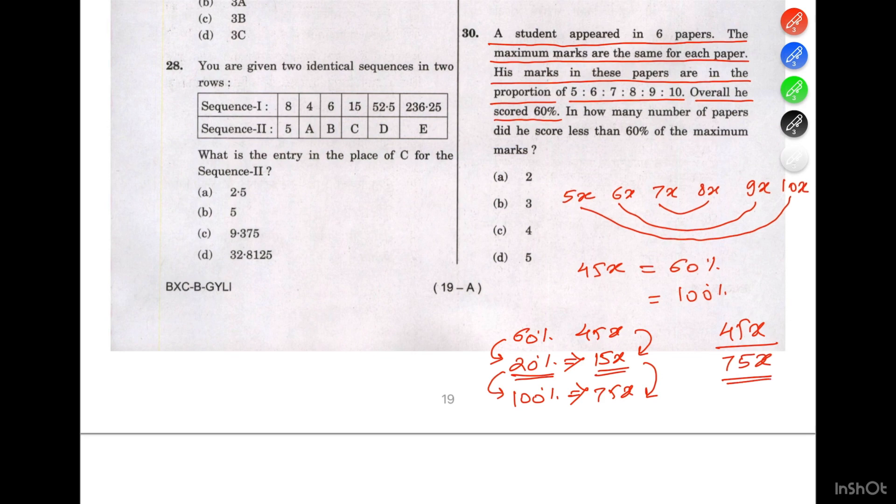If the maximum score can be 75x, we'll consider it as 750. Then what will be the score in each test? It will be 50, 60, 70, 80, 90, and 100.